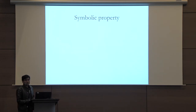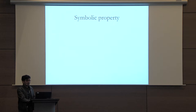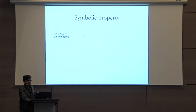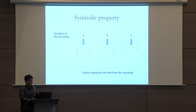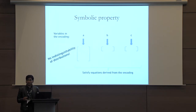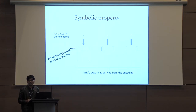In this paper we propose a new property for encodings called the symbolic property. To prove the symbolic property for an encoding, we need to find a mapping from the variables in the encoding to some matrices and vectors that satisfy certain equations derived from the encoding itself. In particular, there is no need to argue about any kind of indistinguishability between some distributions, which is usually a subtle task.